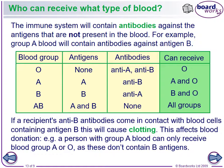Blood group O can only receive O. Blood group A can receive A and O, because O has no antigens to trigger a reaction, and A can donate to A and AB. Blood group B can receive B and O and can donate to B and AB. AB blood can take all groups. If you've got type A blood, you can't take type B. If you have type B blood, you can't take type A. AB receives everything, and O can donate to everything because it has no antigens.